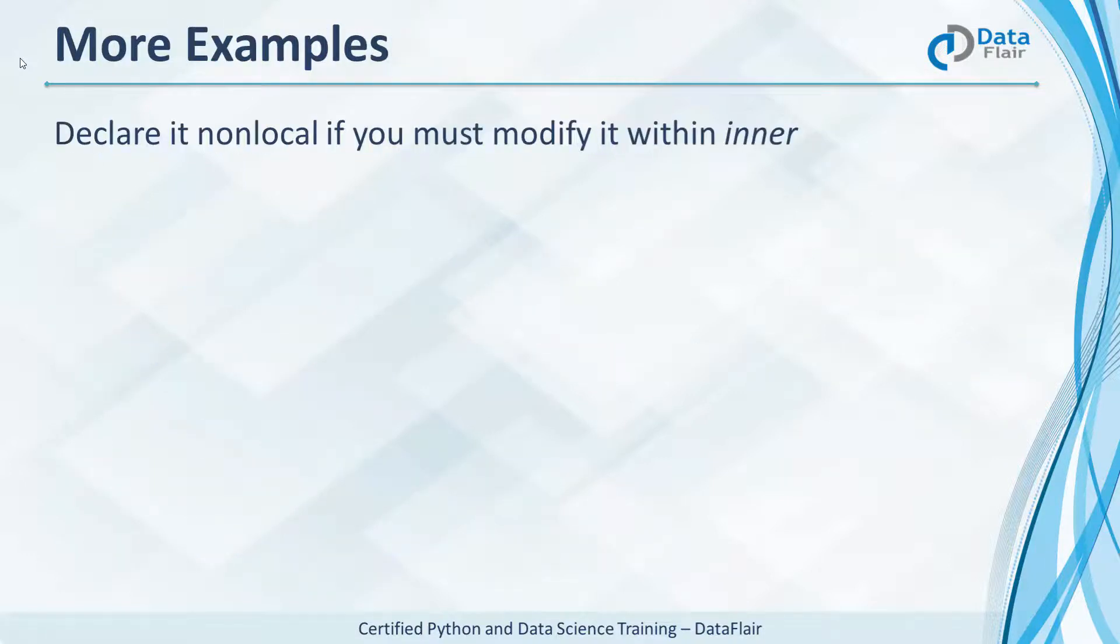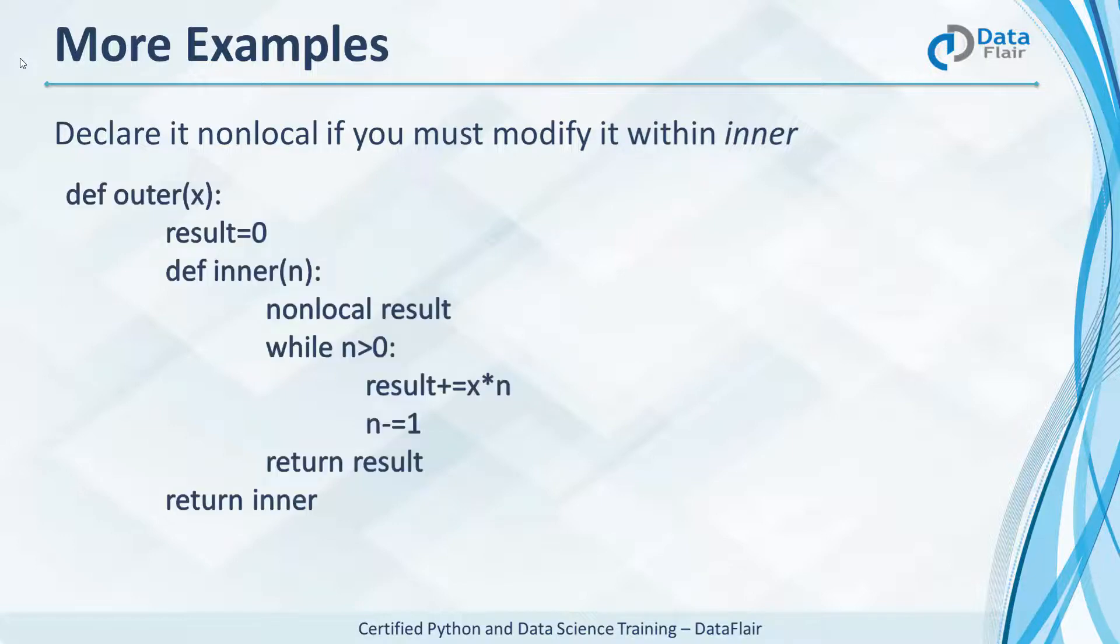But before we leave, let's take a couple more examples. This code has inner modify result and return it. Func is outer of 7. Func of 3 is 42. So what is x and what is n? x is 7 and n is 3.